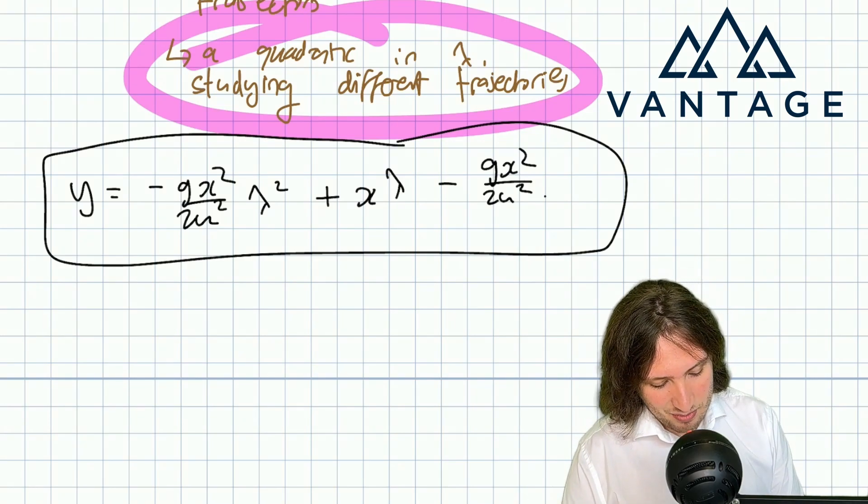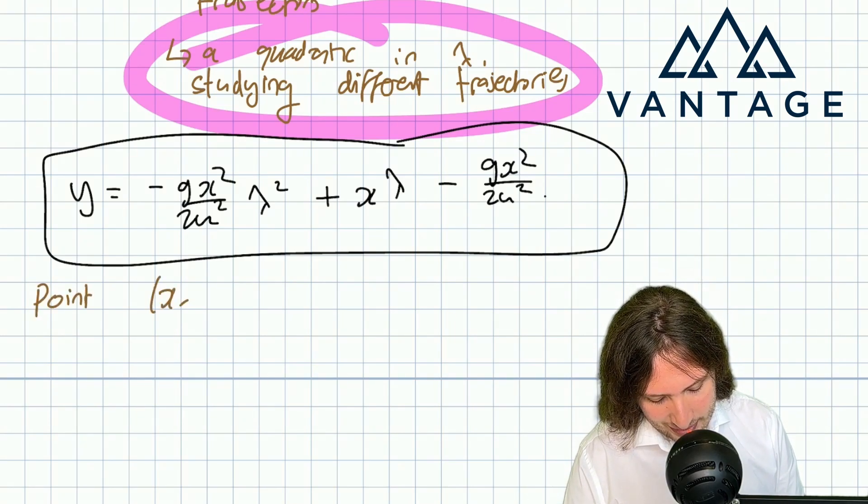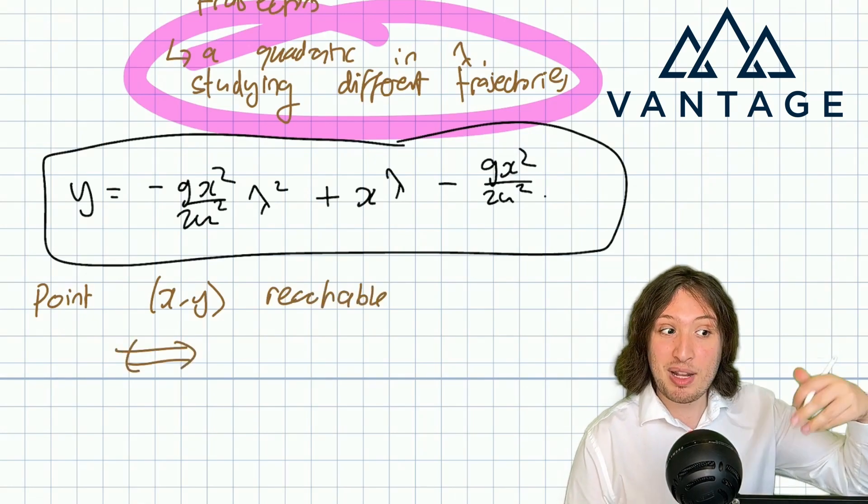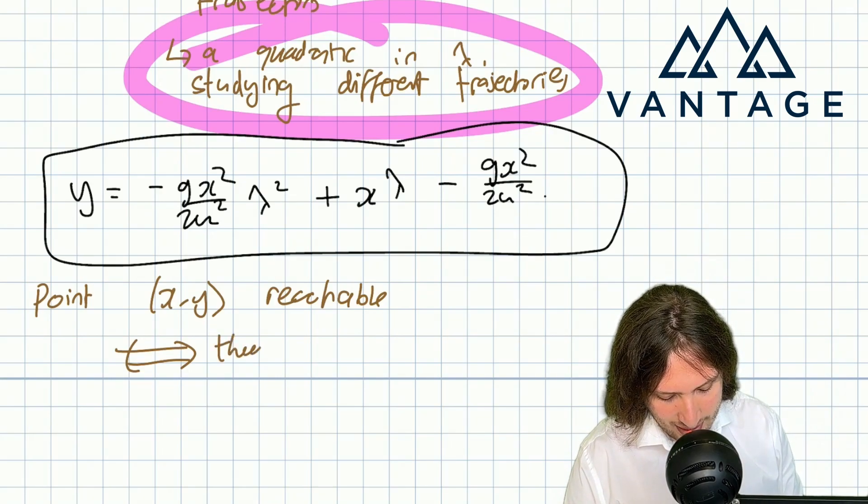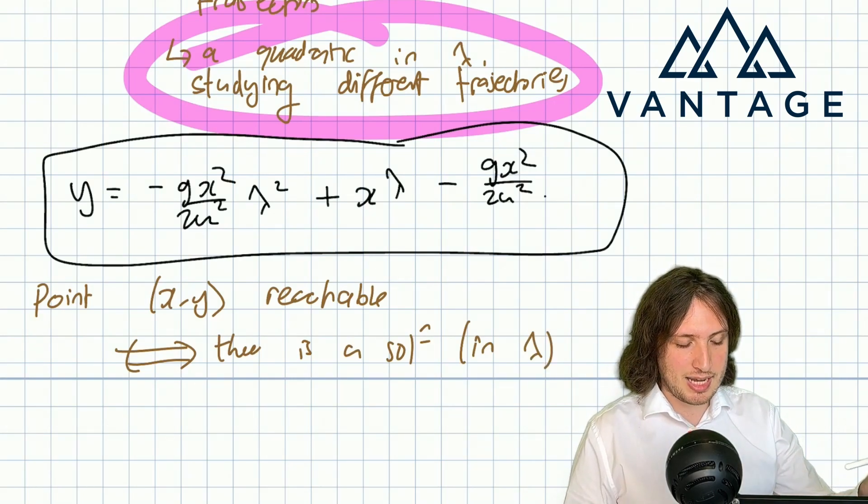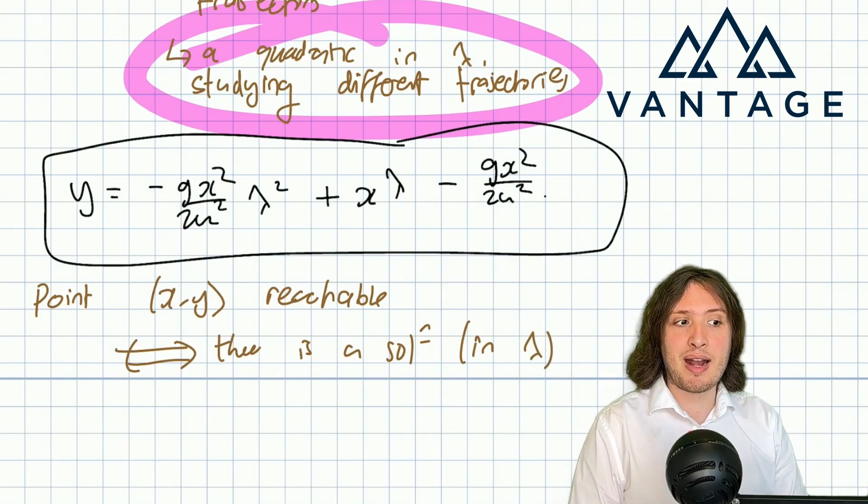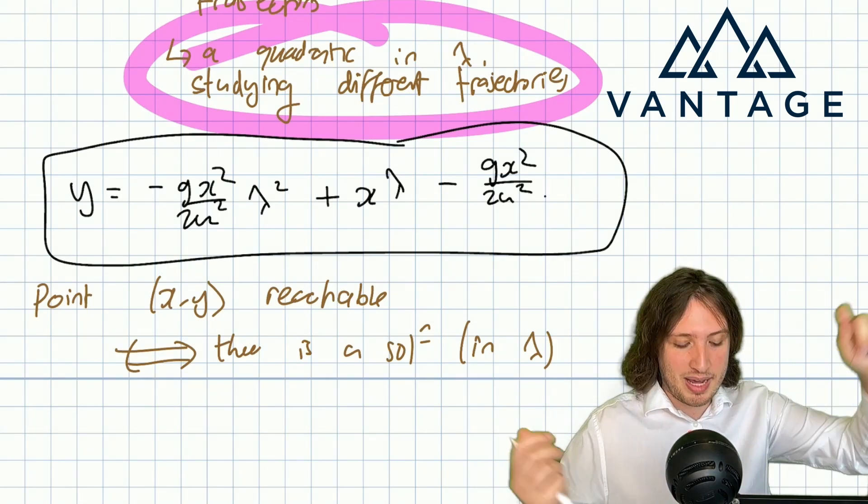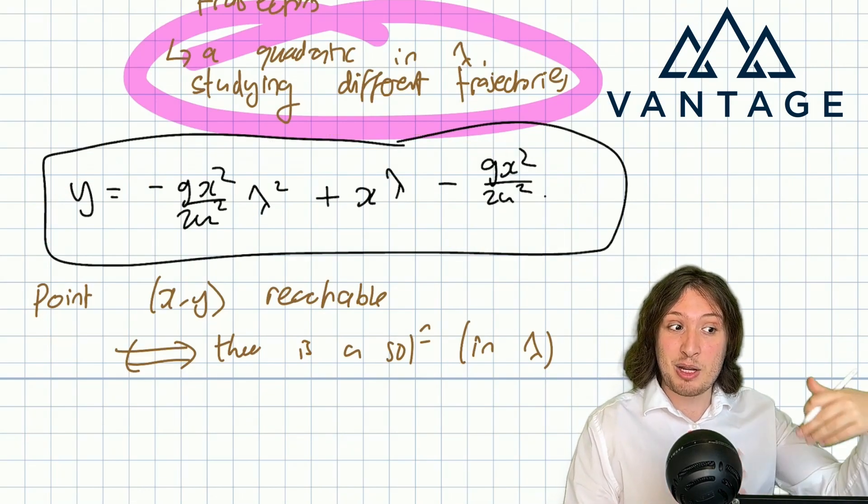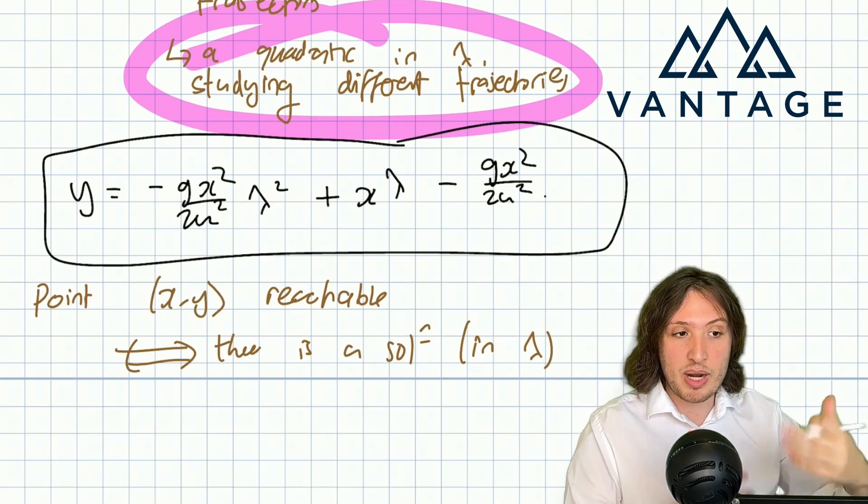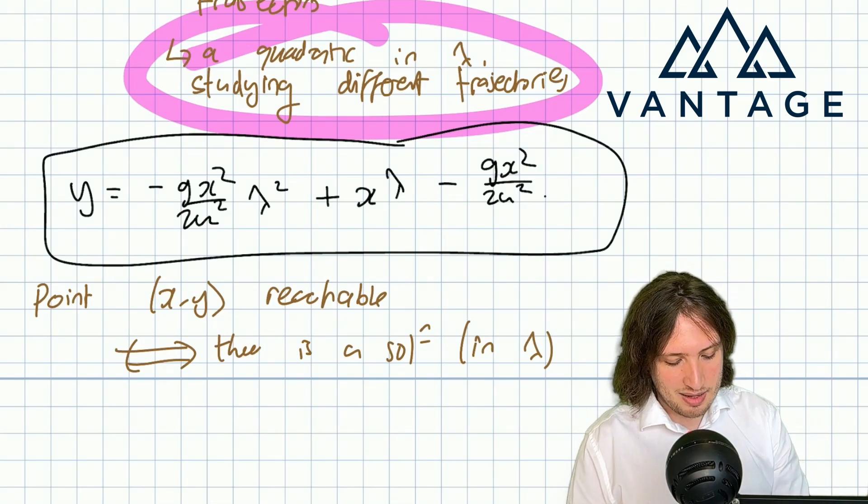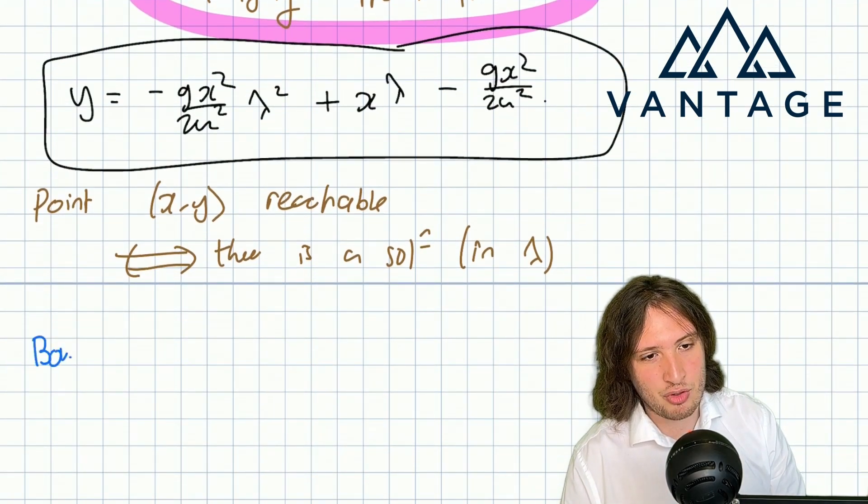Armed with this equation which lets us study the different possible trajectories, how can we study which points are reachable? That's easy—the point (x, y) is going to be reachable precisely when there is a solution in λ. If I want to know whether I pass through the point (1, 5), I put those numbers in and study whether there is a λ, a value for tan θ, an angle for the projection which would let us pass through that point.